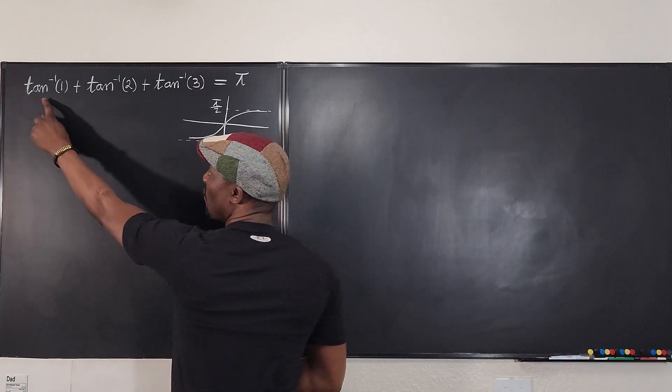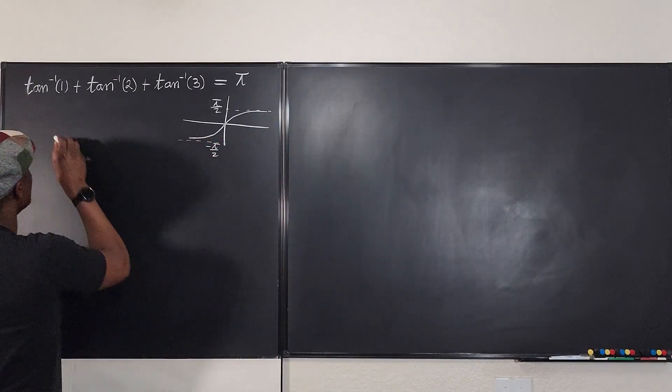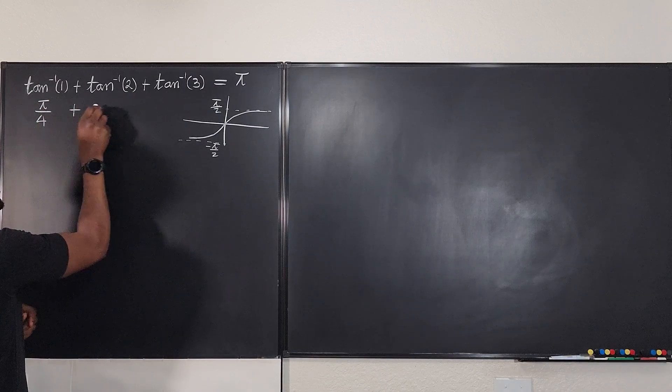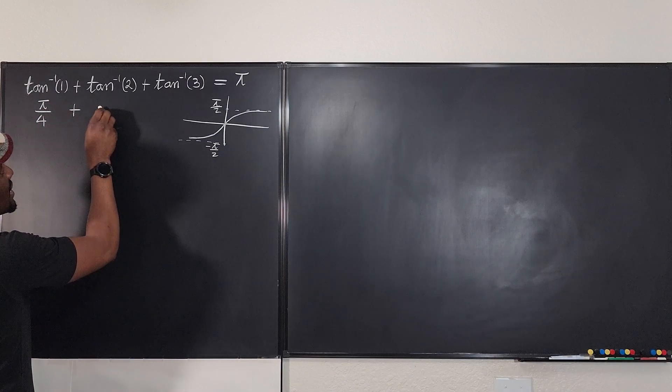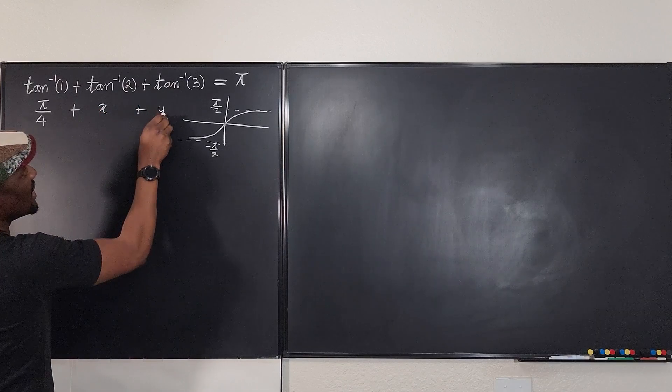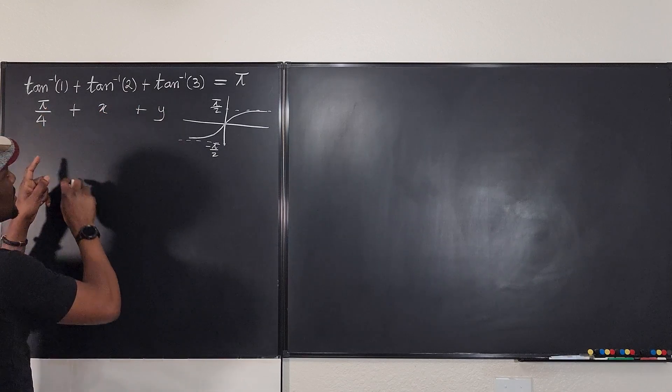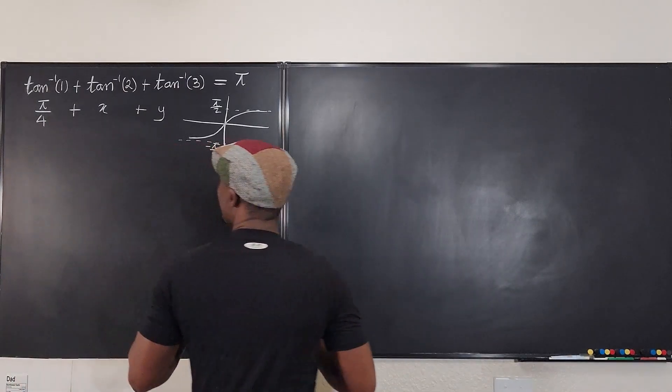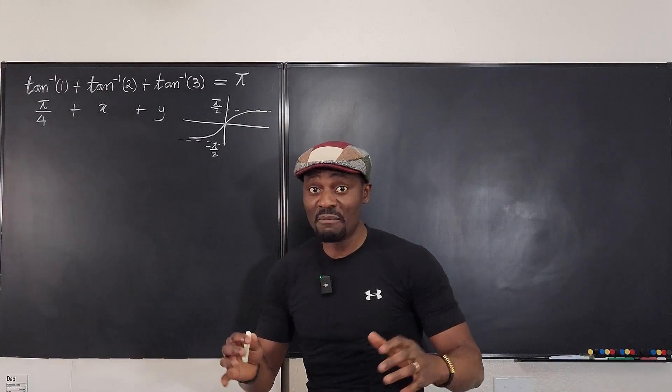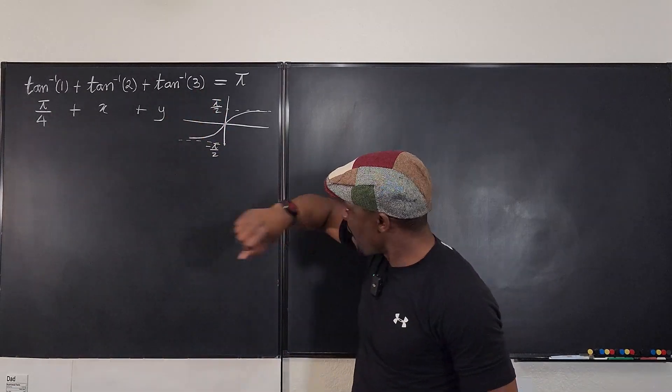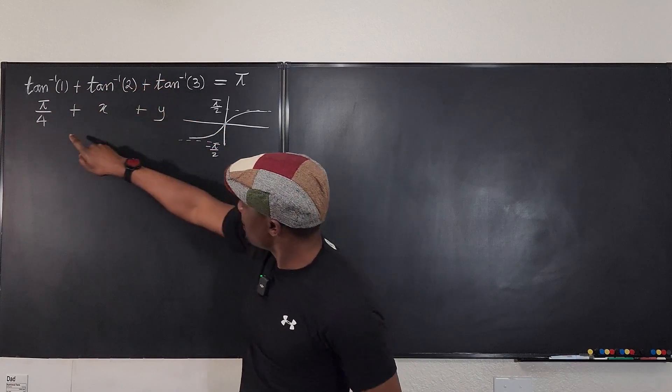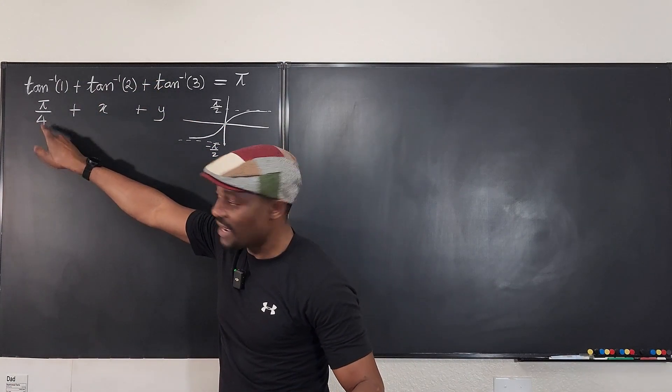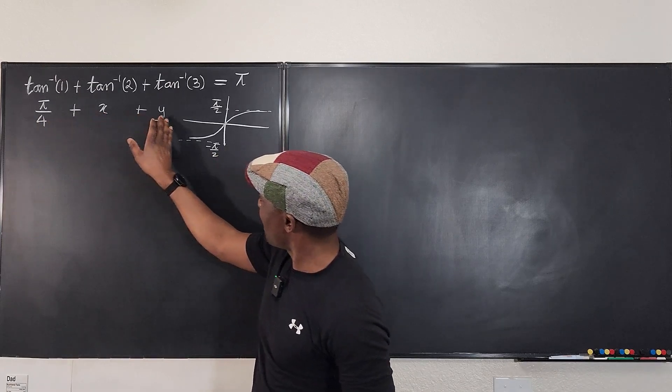Now, because I already know what this is, let's write the answer. This is π/4. I don't know what this is, so I'm going to write x. I don't know what this is, I'm going to write y. But I want to see that π/4 plus x plus y, what is the most it could be.